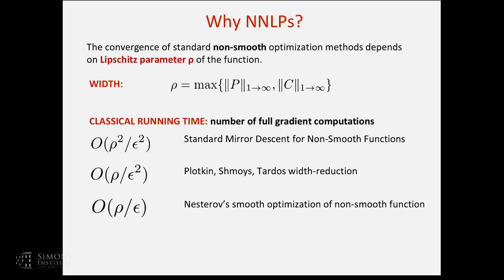Following classical first-order methods, there is not much you can do to eliminate this rho dependence. The most trivial approach gives ρ²/ε² gradient computations. A nice trick by Plotkin, Shmoys, and Tardos achieves width reduction, getting the multiplicative approximation with ρ/ε². Using Nesterov accelerated methods you can get ρ/ε. But all of this depends on ρ — the largest entry in the matrix — so these algorithms are not polynomial. ρ is the actual number, not the description, so it could be exponentially large, and even one huge entry forces a slow running time.